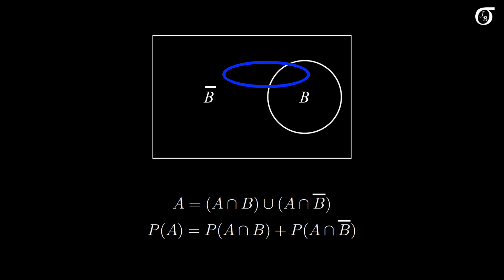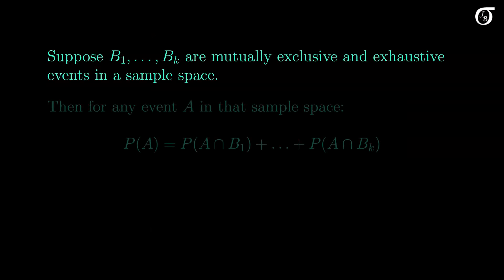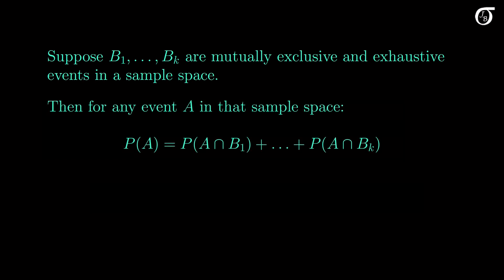Now onto a more formal statement of the law of total probability, which I think will come naturally if we keep these diagrams in mind. Suppose B1 through Bk are mutually exclusive and exhaustive events in a sample space — in other words, exactly one of them will occur on any individual run of the experiment. For any event A in that sample space, the probability of A is the sum of the probabilities of the intersections of A and B1 through A and Bk, which we could express in summation notation if we wished.